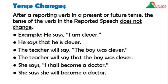Next we have tense changes. After a reporting verb in the present or future tense, the tense of the verb in the reported speech does not change. Example: He says, 'I am clever.' In indirect: He says that he is clever. You have just used 'that' to make it indirect — that is all. The teacher will say, 'The boy was clever.' In indirect: The teacher will say that the boy was clever. Here also you are pointing out that the boy was clever.